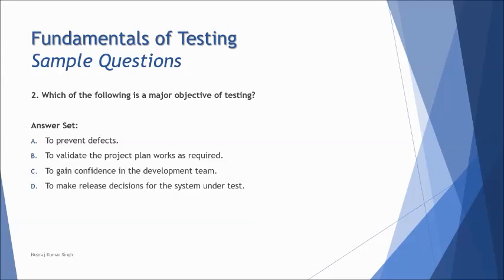The second one here is which of the following is a major objective of testing? I think that's straightforward. On the first tutorial I told you it is to prevent defects. Look at B: to validate the project plan works as required. Of course, project plan is the entire project detail, not the testing related. C: of course it is to gain confidence, but not in the development team, so C is ruled out. D: to make a release decision for the system under test. No, you only provide information for decision making, but you don't make decisions.